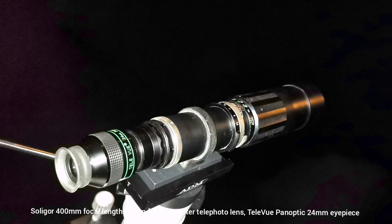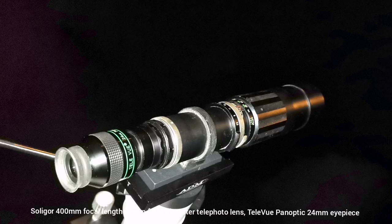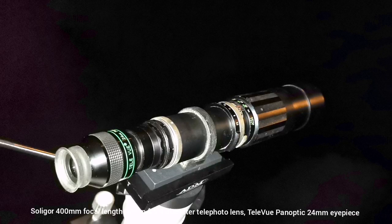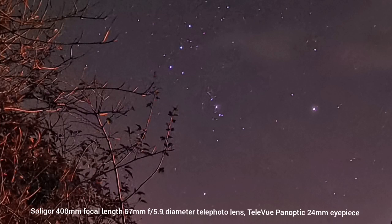The first telescope I'm using is the Seliger old lens, a solid old lens with a 400mm focal length and 67mm aperture, and I'm using a TeleVue Panoptic 24mm eyepiece.